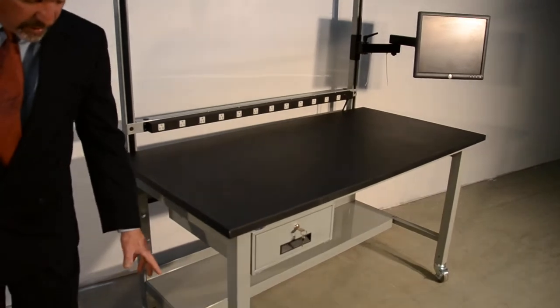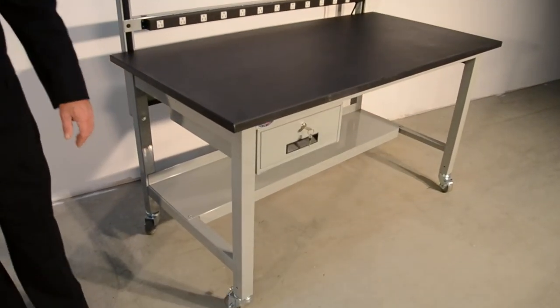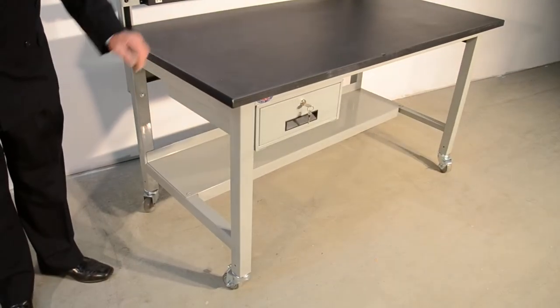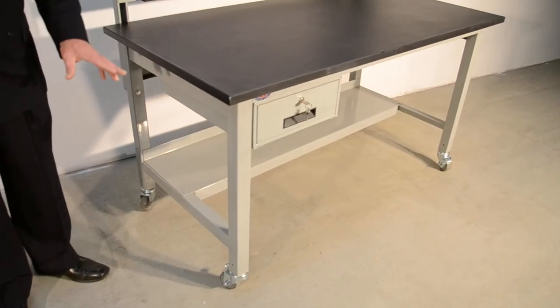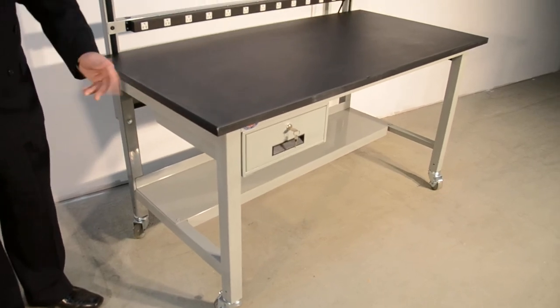Now underneath the surface we have our C4 casters. Those C4s are unique to the Model HD. They pop into the bottom of it and they are able to be added in the field at a later date. They do lock, the swivel doesn't lock on them.